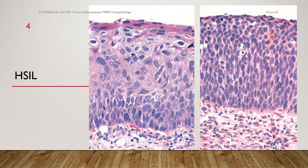HSIL changes are synonymous with CIN-2 and CIN-3 — cervical intraepithelial neoplasia. Here the changes involve about two-thirds or more of the ectocervix, and here they involve the full thickness. In HSIL the nuclei have increased to such a size that cytoplasm is very minimal — the nuclear-to-cytoplasmic ratio also increases. In LSIL, nuclear size also increases but not to the extent that cytoplasm becomes minimal.